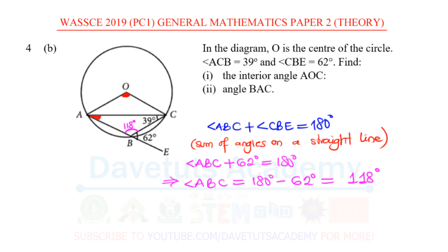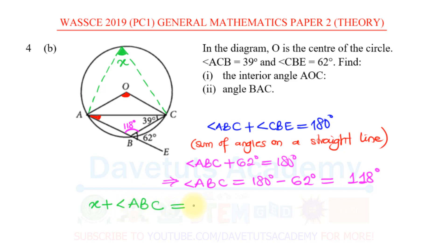Looking further into this question, I can also see that if I extend this particular diagram — since I already know this angle is 118° — I can find the angle that chord AC subtends at the circumference. Let me draw a straight line down to point C using a broken line, and call that angle X. From the diagram, angle X plus angle ABC will sum to 180°.